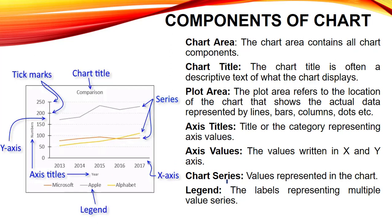Next we have chart series — the data that we represent in the plot area is termed as our chart series. Then we have legends. Sometimes when comparing multiple data values, we use various colors or bars to represent data differently. For example, in a chart with three colored lines representing Microsoft, Apple and Alphabet, chart legends are the labels used to separate and identify multiple data series.